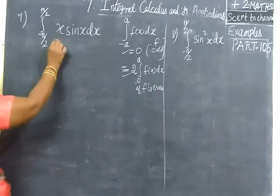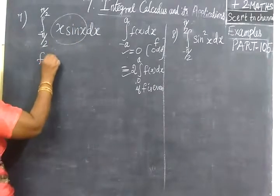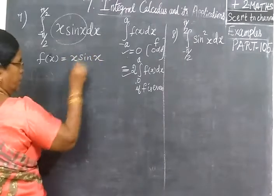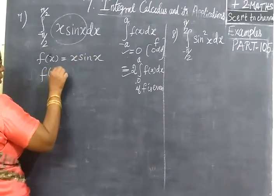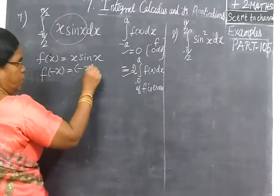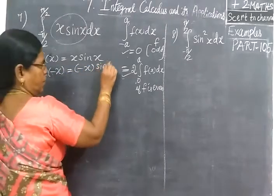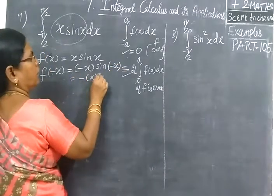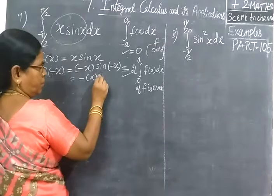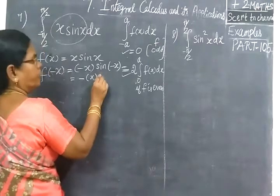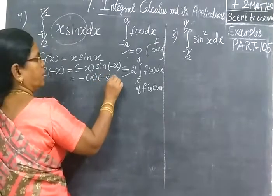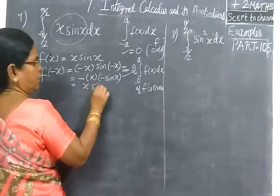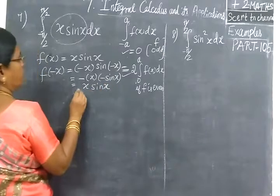Now let us see: this is f(x), so f(x) equals x·sin(x). Then f(minus x) equals minus x·sin(minus x). Now sin(minus θ) equals minus sin(θ), so we get minus x times minus sin(x), which gives x·sin(x). This is nothing but f(x).